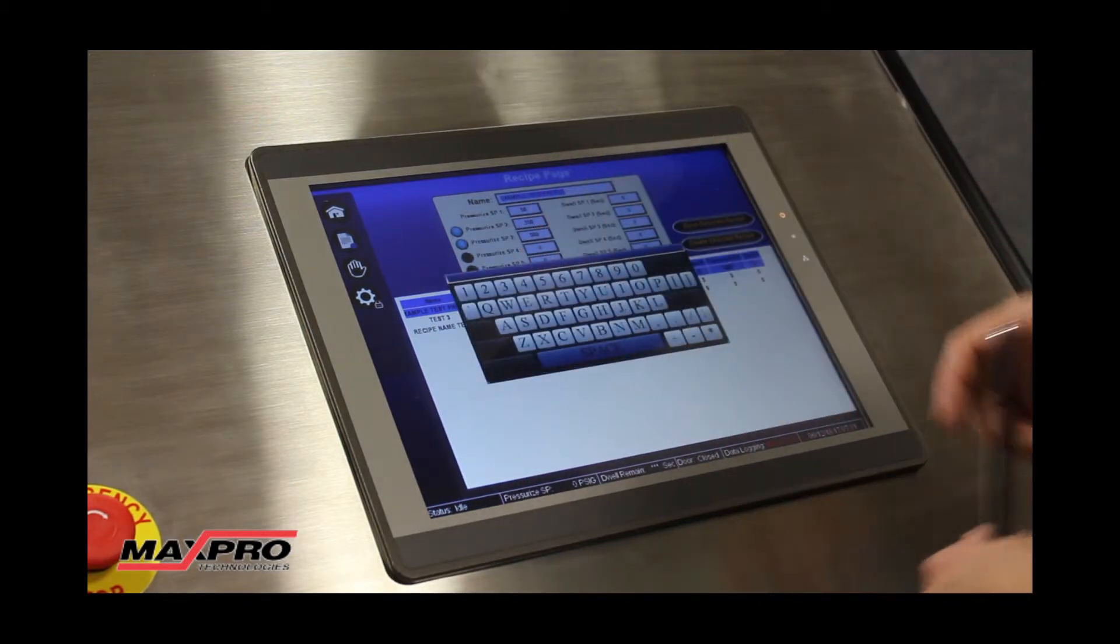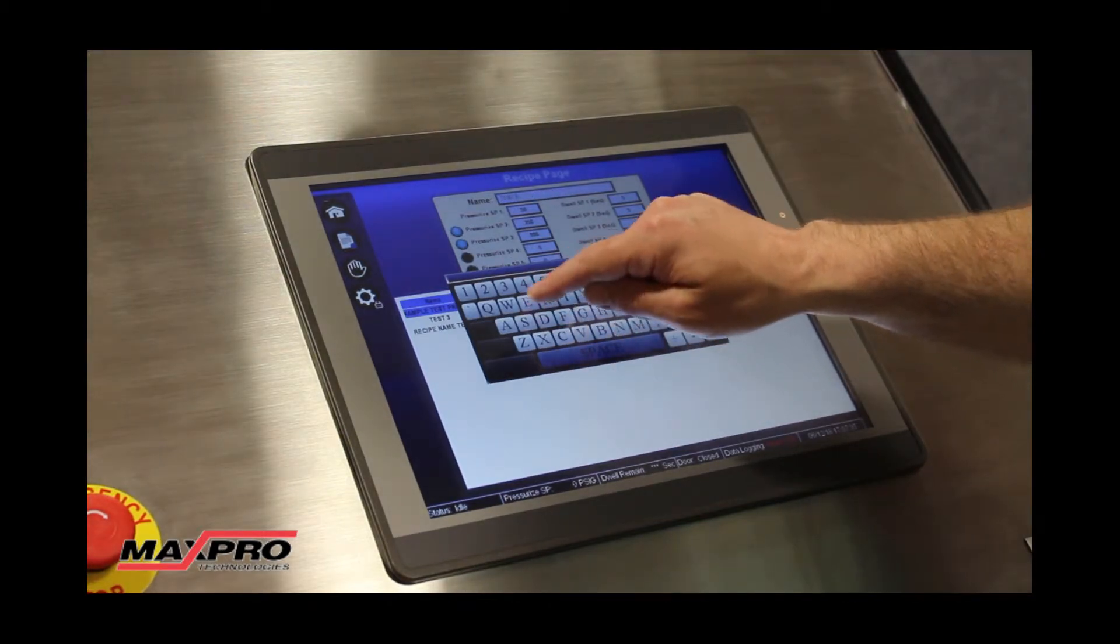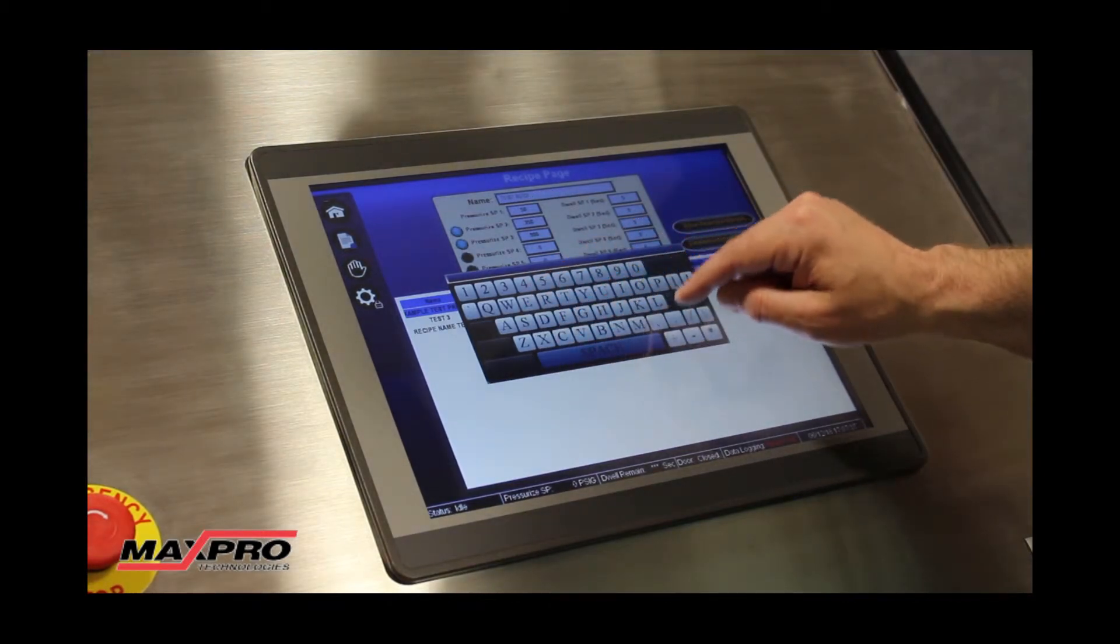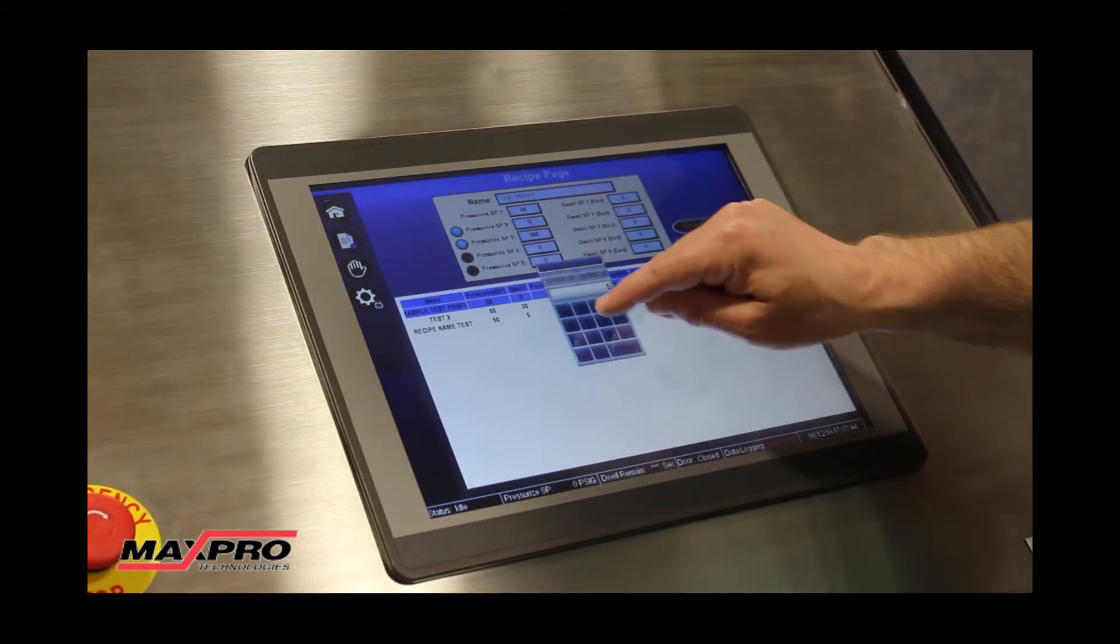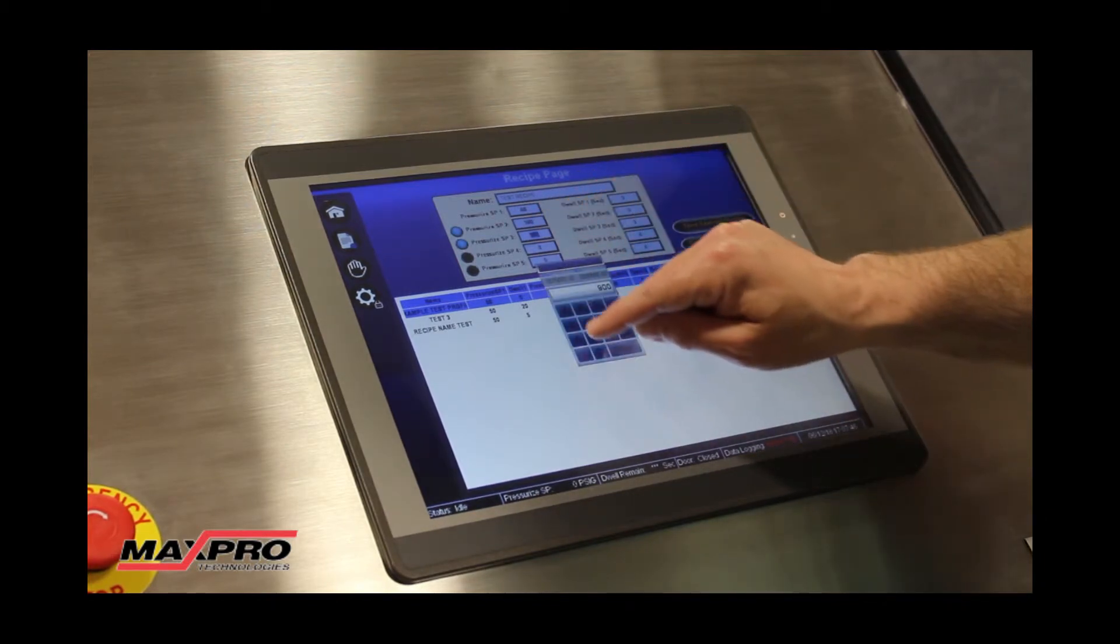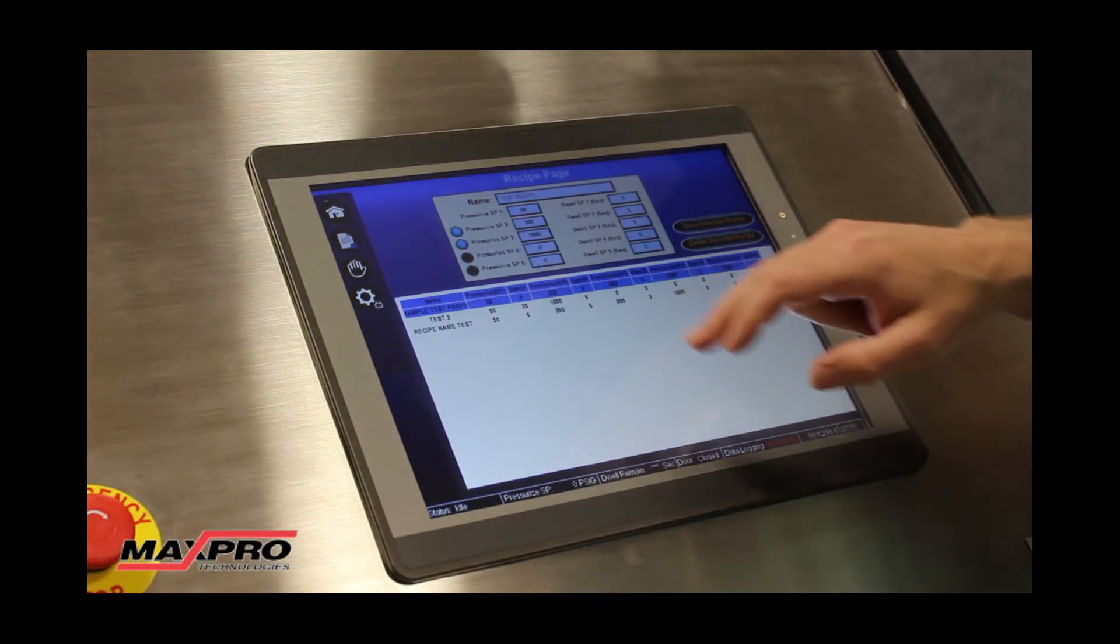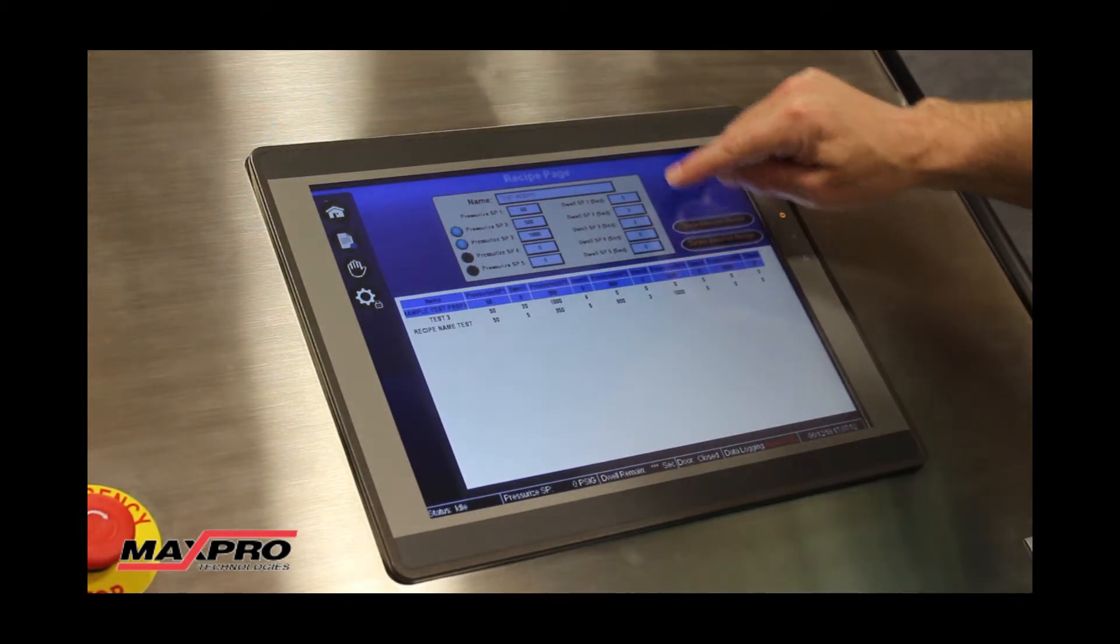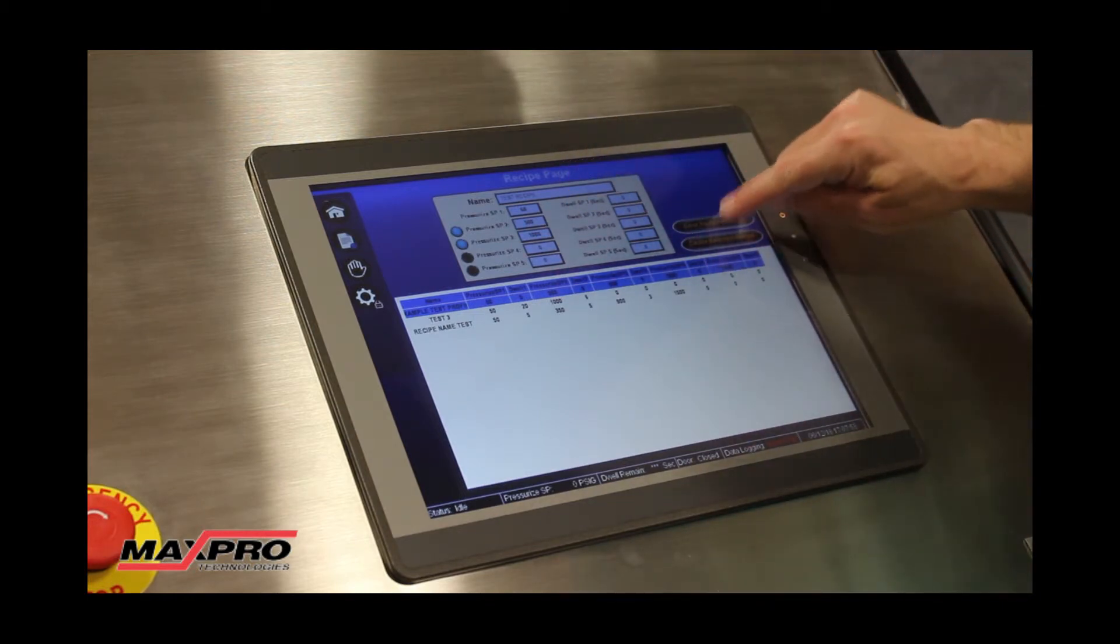Click on the name, click enter, and enter your first set point, second set point - for this test we're only going to do three points. Then on the left, enter the amount of time it should stay at each pressure set point. Once you're happy with the recipe, just click save.